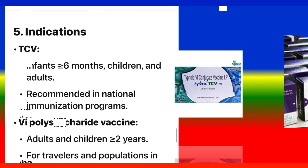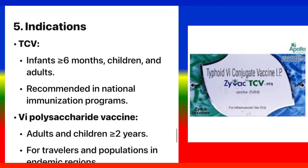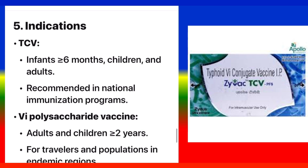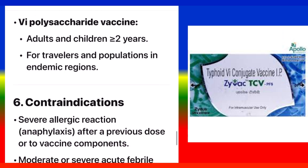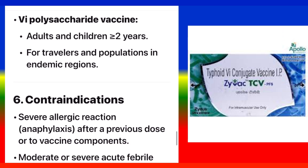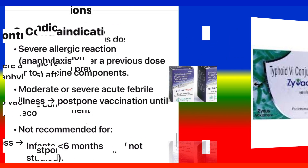Indications: TCV is indicated for infants 6 months and older, children, and adults, and is recommended in national immunization programs. The Vipolysaccharide vaccine is indicated for adults and children aged 2 years and older, for travelers and populations in endemic regions.